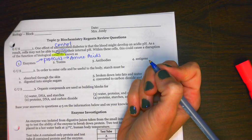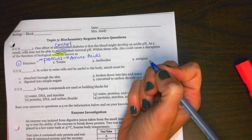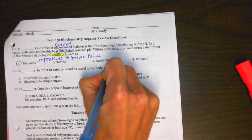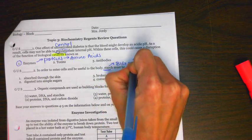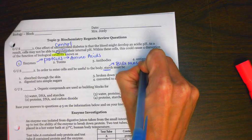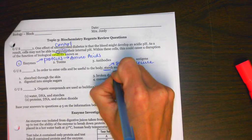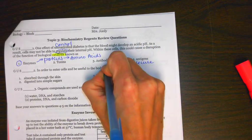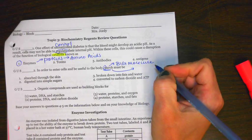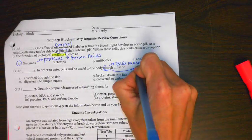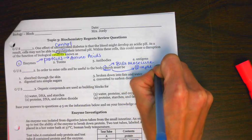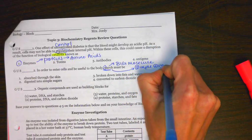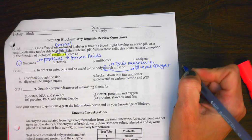Number 2 says, in order to enter cells and be useful to the body, starch must be. Now what you have to remember is, starch is going to be a big molecule. Since it's a big molecule, that means that it has to be digested. So what you have to think is, what are the building blocks of starch? The building blocks of starch are going to be simple sugars.